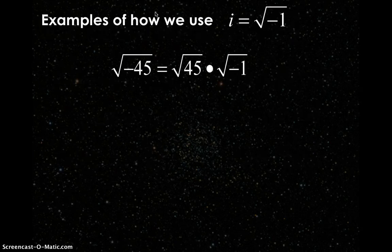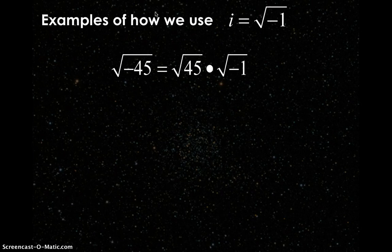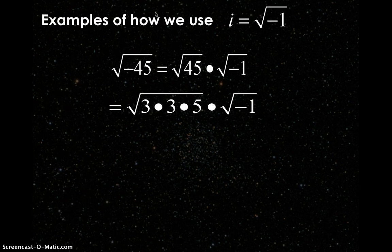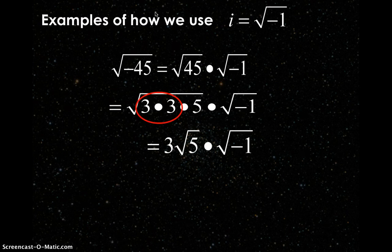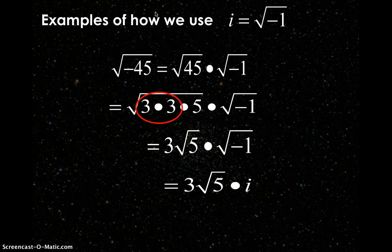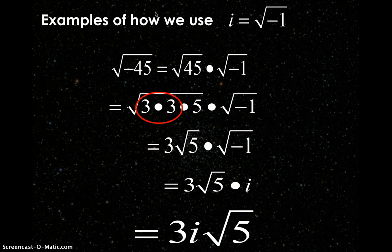Some non-perfect square examples, like the square root of negative 45. The first step is always to eliminate the negative by rewriting it as the square root of negative 1 on its own. The square root of 45 breaks down into prime factors: 3 times 3 times 5. That is times the square root of negative 1. We have a pair of 3s which come out of the radical — 3 root 5 — times i. By mathematical convention, we move the i in front, so the final answer is 3i root 5.